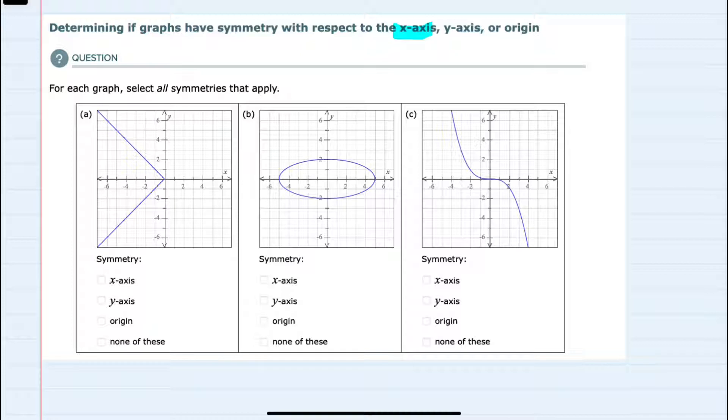So in order for a graph to have x-axis symmetry, every point above the x-axis should be mirrored below the x-axis. So in the first graph, every point above has a mirror image point below, so this does have x-axis symmetry.